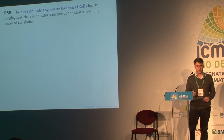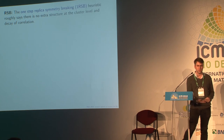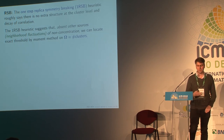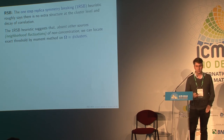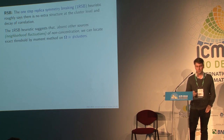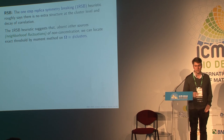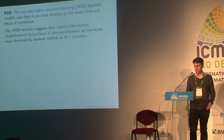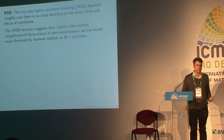This suggests that we would be better off working with the clusters themselves, since they don't have any extra structure, and just looking at moments, counting the number of clusters. This has turned out to be a really fruitful approach, particularly in models on regular graphs, where you don't have to deal with the difficulties of neighborhood fluctuations because all the neighborhoods look the same.